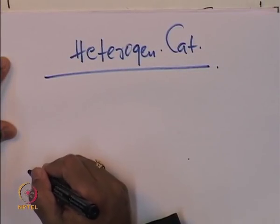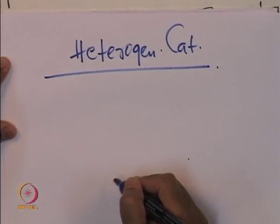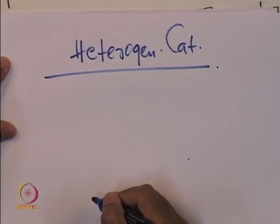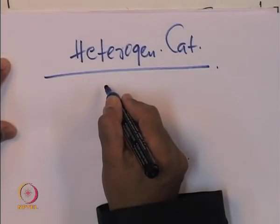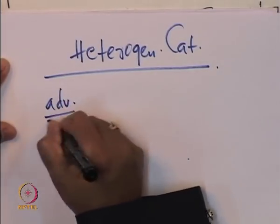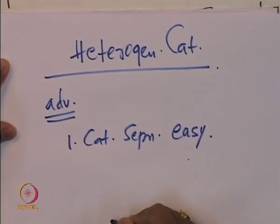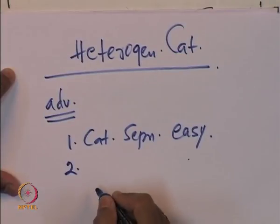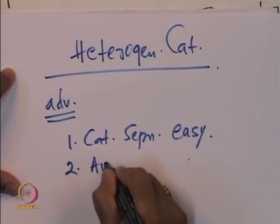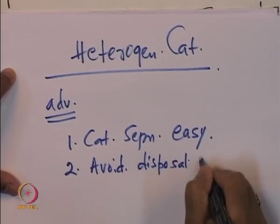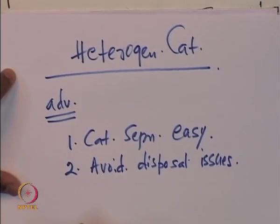The heterogeneous catalyst is mostly in a different phase — most of the time it is solid while reactants and products are in gas or liquid phases. The first advantage: you do not need catalyst separation, or catalyst separation is easy. If it is a fixed bed reactor, the catalyst remains in the reactor and we do not need to separate it, whereas in the case of a homogeneous catalyst it goes with the reaction mixture and we need to separate it, creating disposal problems. So separation is easy, and you avoid disposal issues or there is less load on effluent treatment.